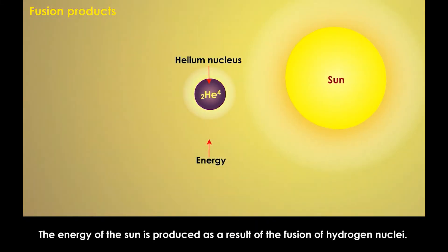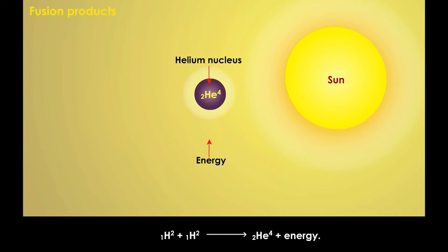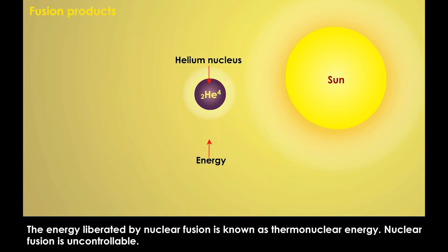The energy of the sun is produced as a result of the fusion of hydrogen nuclei. Hydrogen plus hydrogen gives helium plus energy. The energy liberated by nuclear fusion is known as thermonuclear energy.